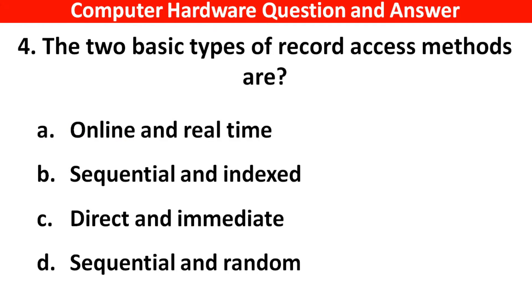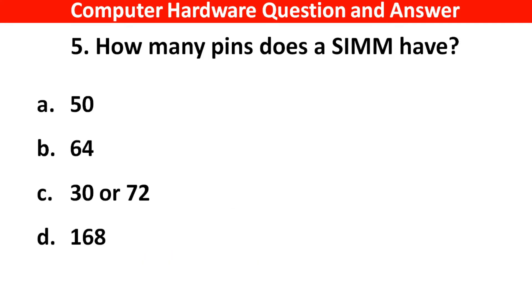The two basic types of record access methods are — the right answer is Option D: Sequential and Random.